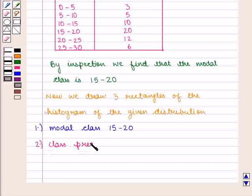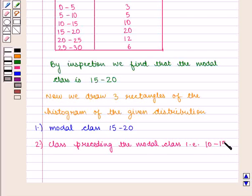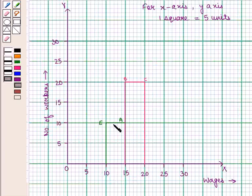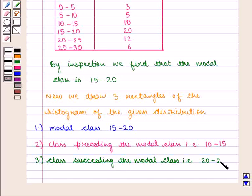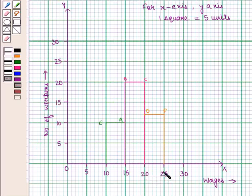The second rectangle is for the class preceding the modal class, that is 10 to 15, which has 10 workers. The third rectangle is for the class succeeding the modal class, that is 20 to 25, which has 12 workers.